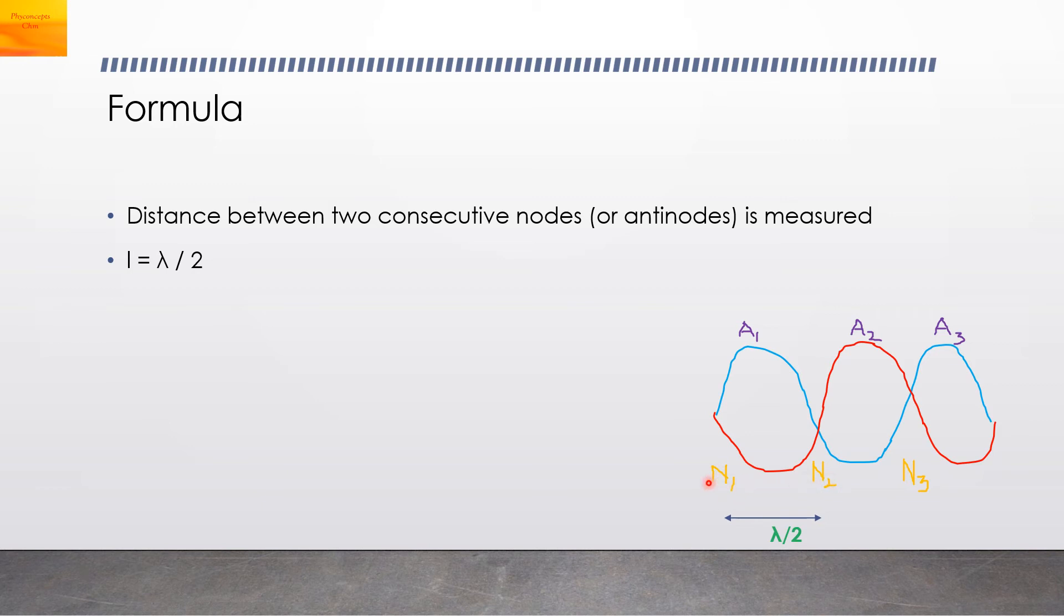This distance will denote as small l, and that is lambda by 2, half of the wavelength. Therefore we can write down the wavelength lambda equals 2 into l. Then we can find the velocity of the sound waves v equals N lambda, N is the frequency, input frequency. Substituting lambda as 2l, we get v equals 2Nl.